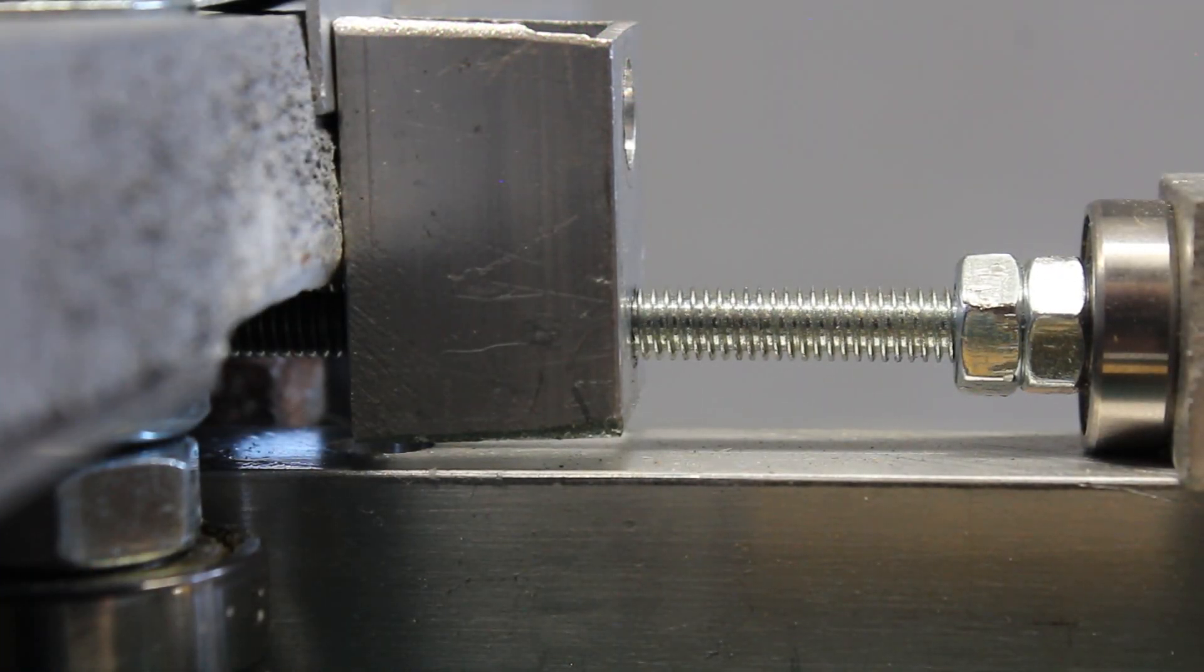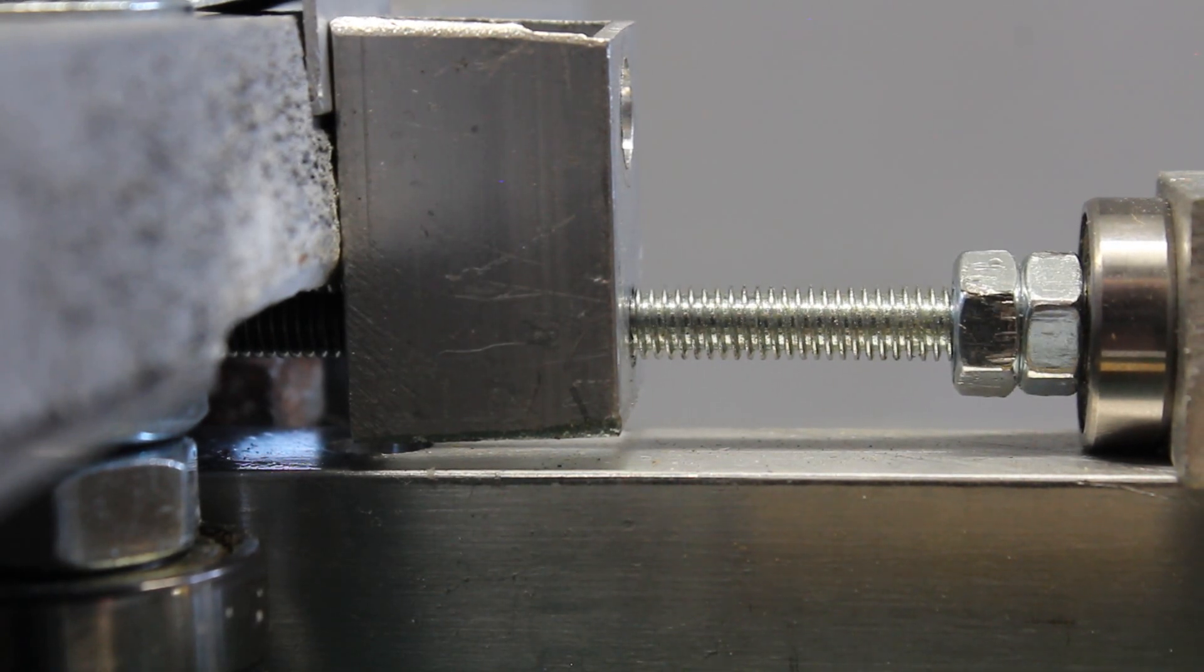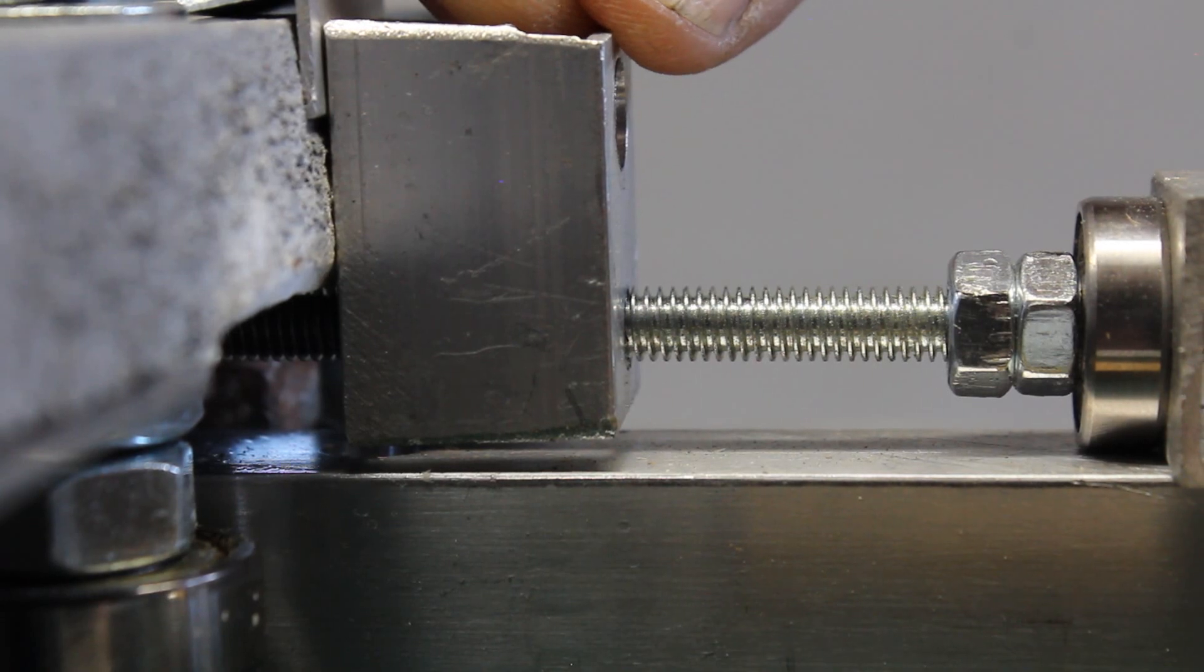In practice, backlash is usually higher than the academic step width. The microcontroller can't detect the backlash, thus it can't compensate that kind of movement.